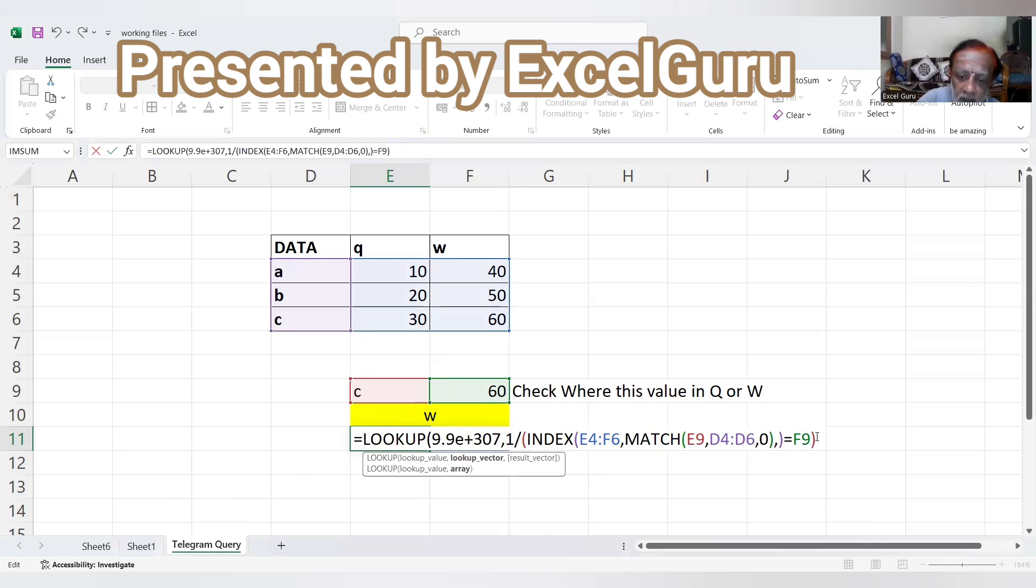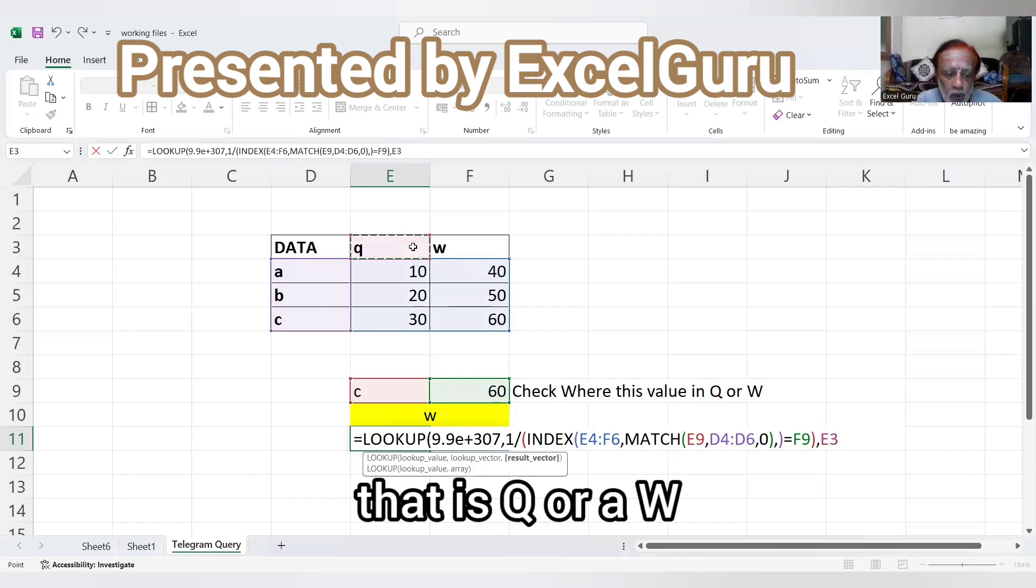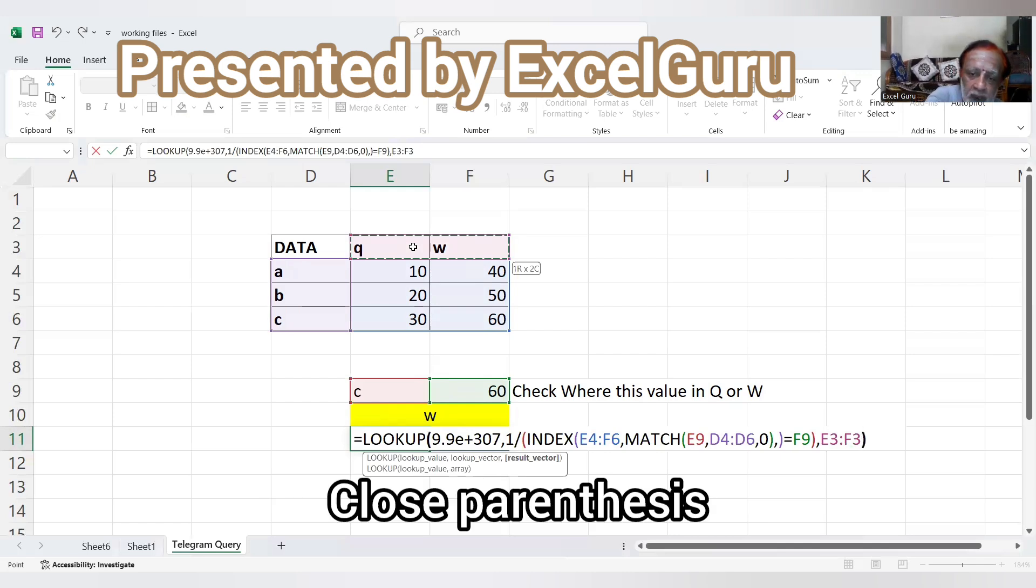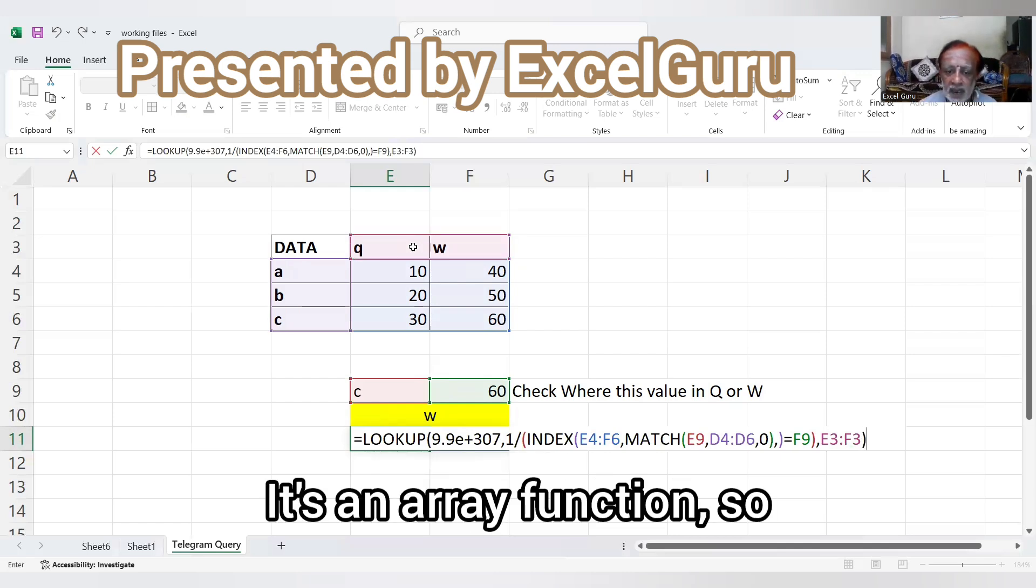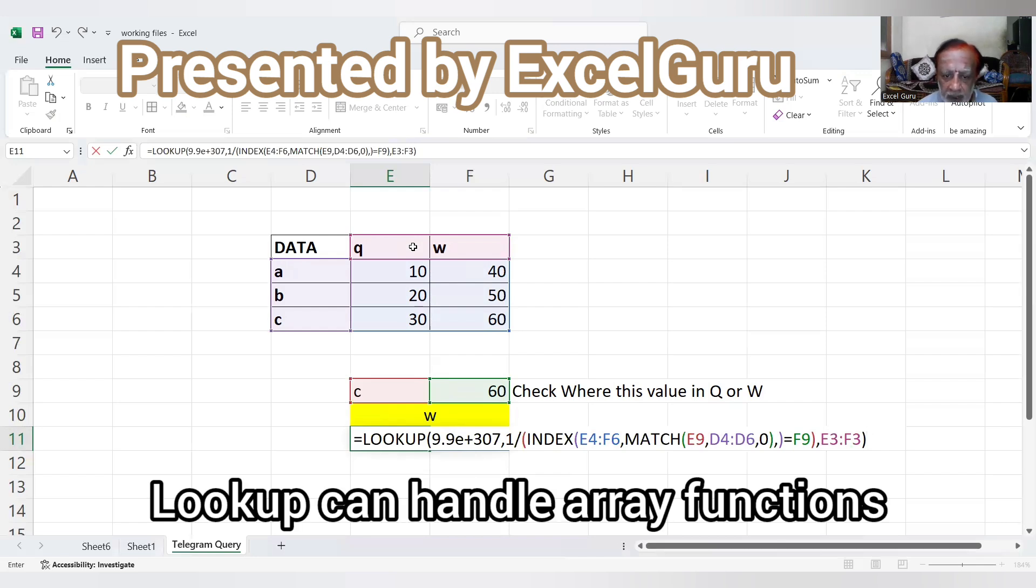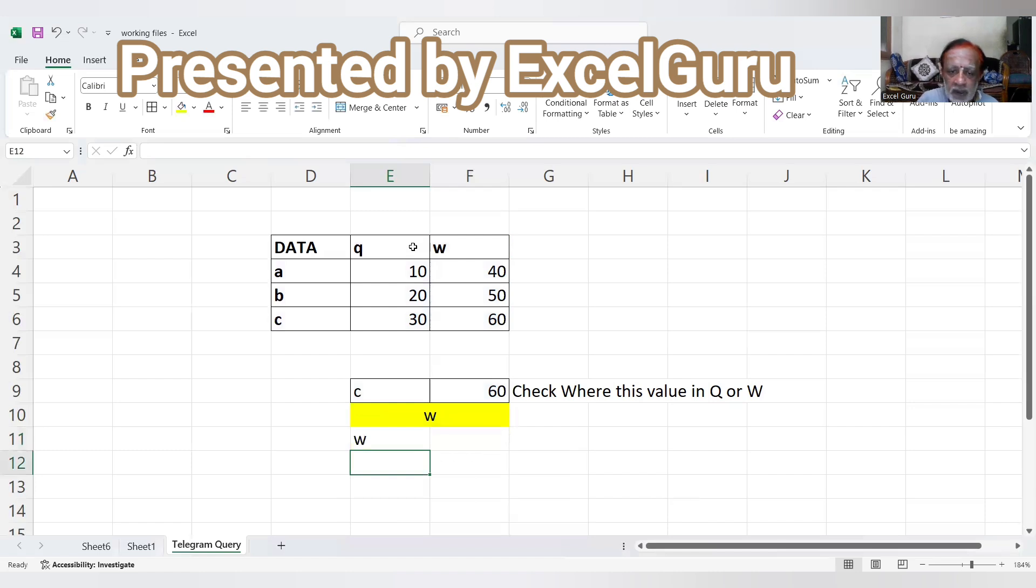It's the last occurring number. And what will be the result vector? The result vector will be whatever we need, that is Q or W. Control Shift right arrow, close parameters. It's an array function, so there's no need to - it doesn't need, it will work. LOOKUP can handle array functions.